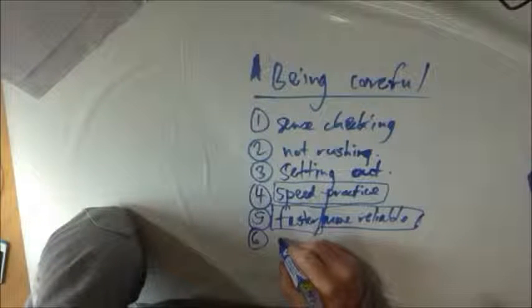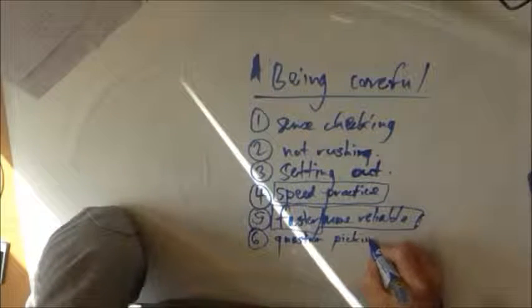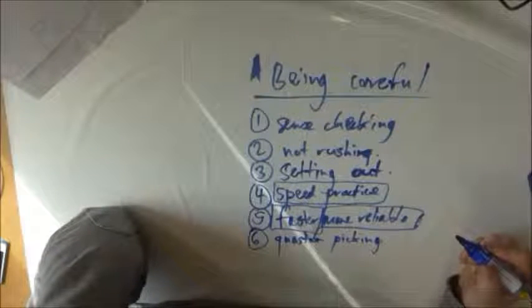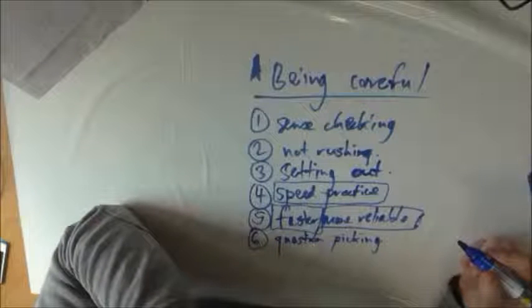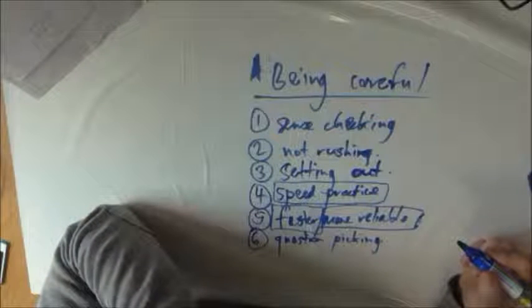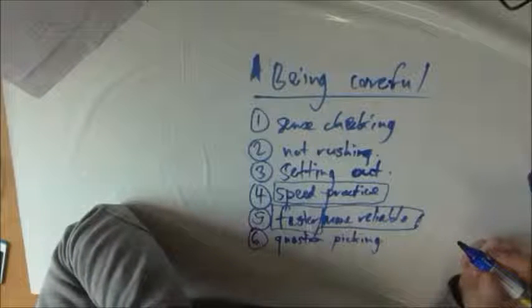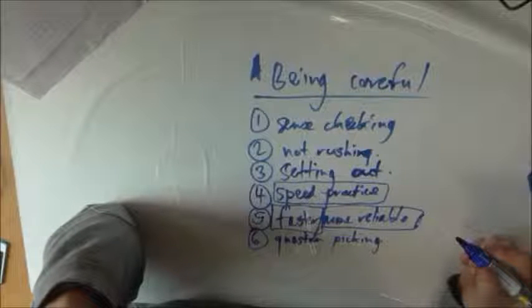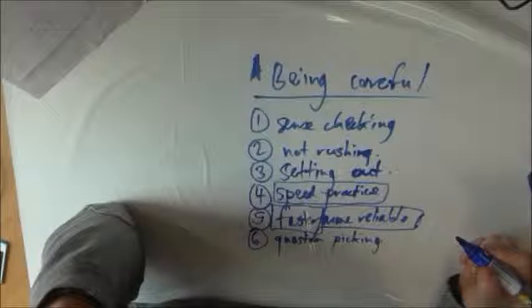And finally, I would recommend question picking. There's many students who feel they need to work through a paper in order and that makes a certain amount of sense. You start with the easy questions. But if it's the case that there are certain topics that are your specialty, so you know you're extremely good at circle geometry or whatever, then why not go straight to a circle geometry question and do that first.